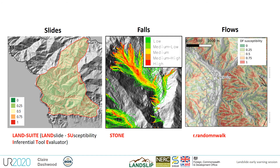In Landslip we considered three landslide processes — slides, falls and flows — using a statistical, simplified deterministic and a conceptual model to produce three susceptibility maps. For slides we utilised the CNR model Landsuite, which includes a validation module. It is essential in any study to validate your model, and there is a wealth of literature on this topic available. It's also important to consider the mapping units of both the susceptibility map and the landslide early warning system — are these pixel, slope unit or administrative district, and are they comparable on scale and resolution?